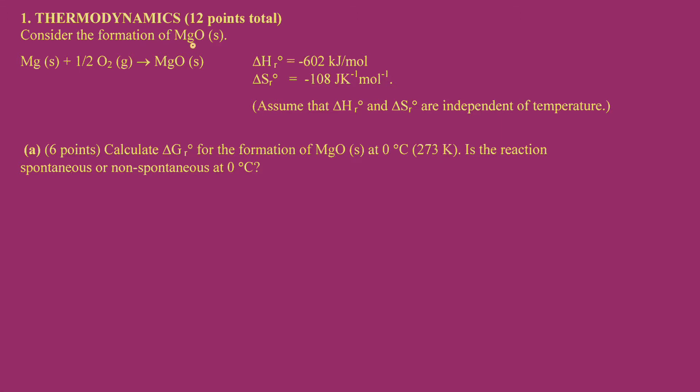The question is: consider the formation of magnesium oxide solid. The reaction is given: Mg solid plus half O₂ gas giving MgO solid. Enthalpy change of this reaction is minus 602 kJ per mole, and entropy change, that is the standard entropy change, for this reaction is minus 108 Joule per Kelvin per mole.